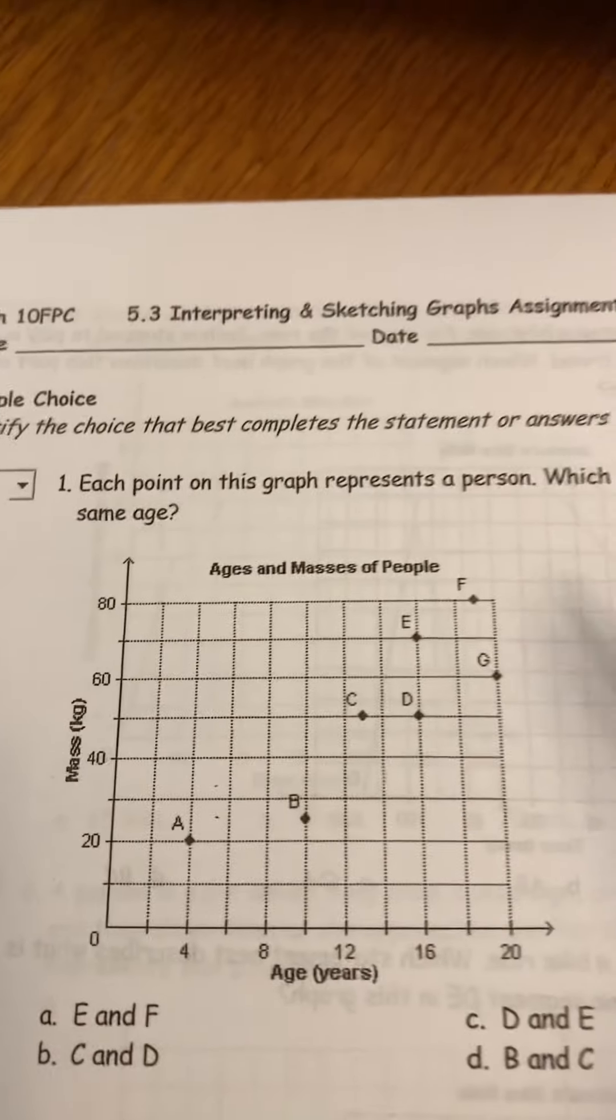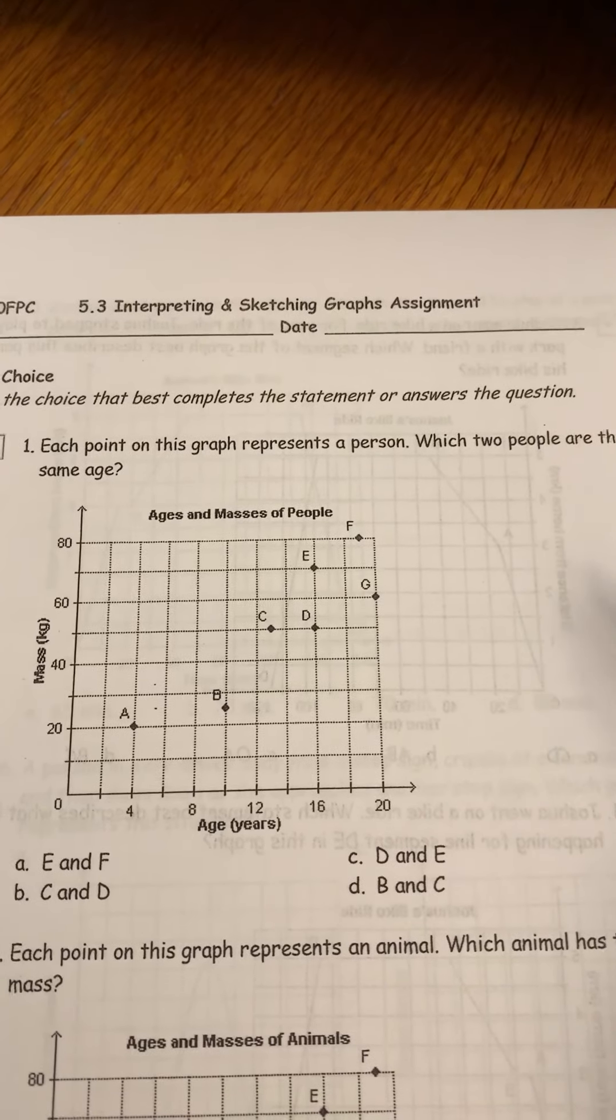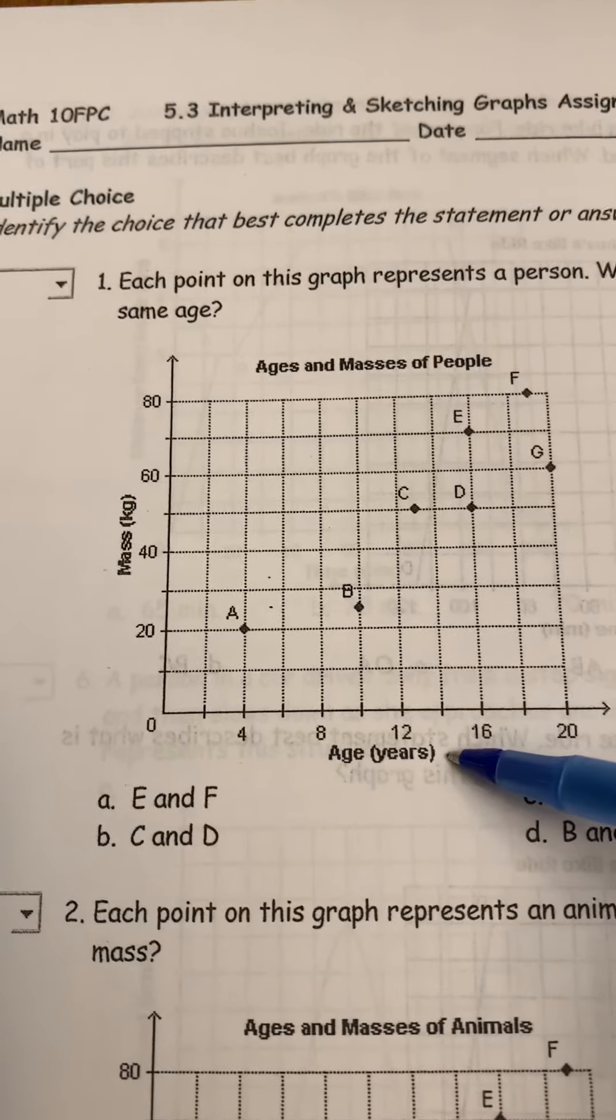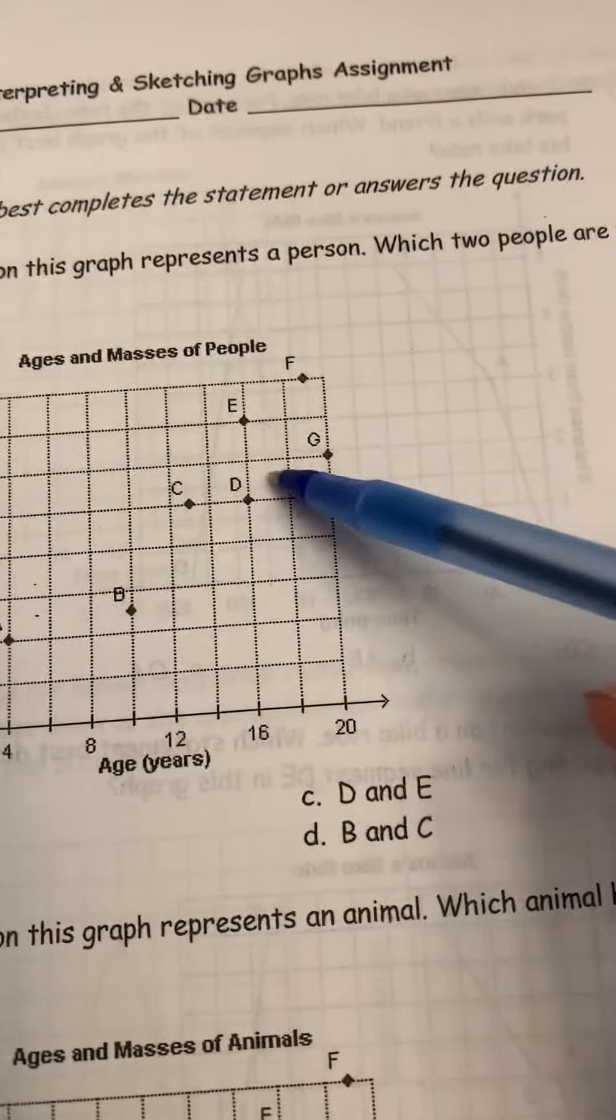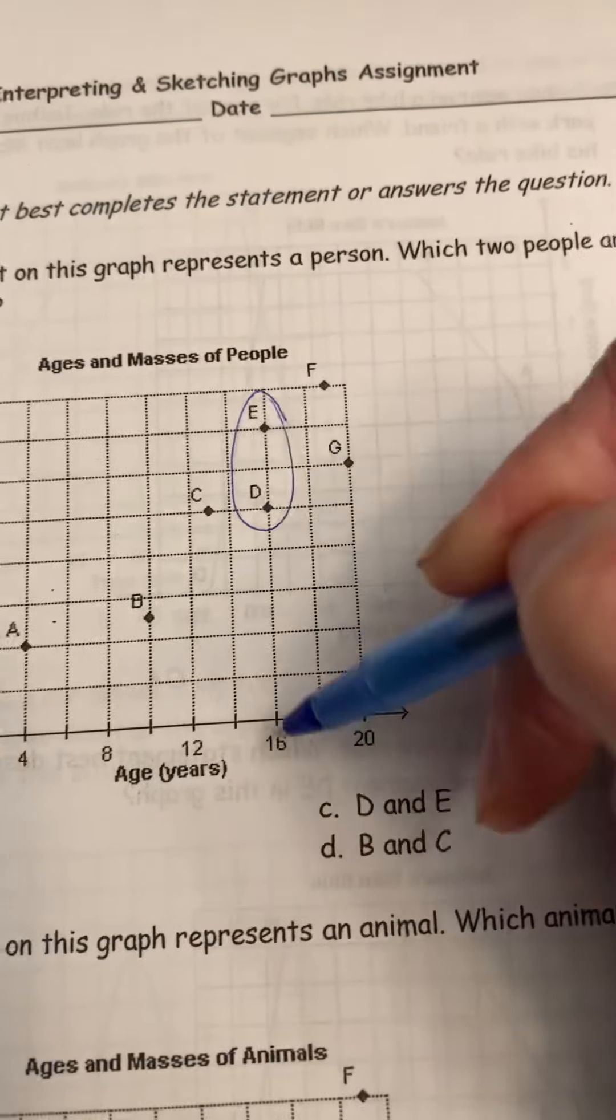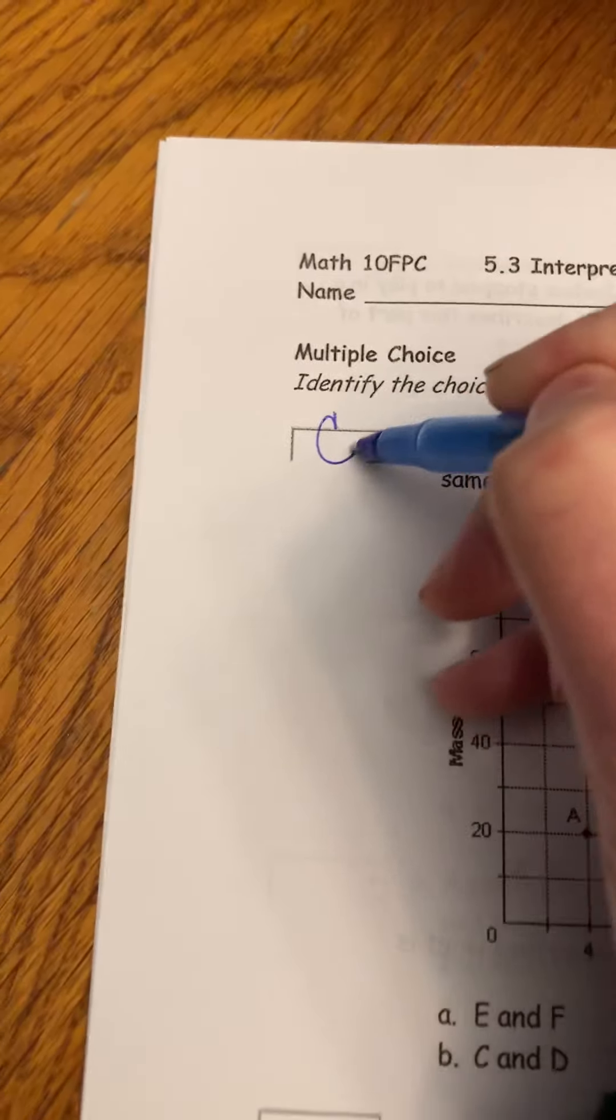So we're going to take a look at question number one. It says each point on this graph represents a person, which two people are the same age. You can see down here on the x-axis is representative of the age. So we're going to look for ones that have the same age. That would be E and D and they are 16. So you should have had C there, so correct your work.